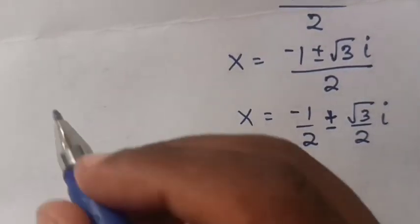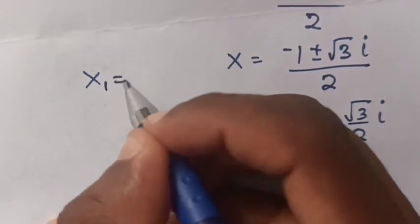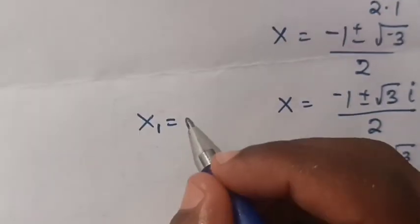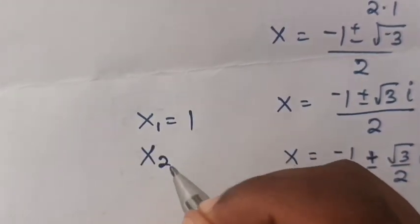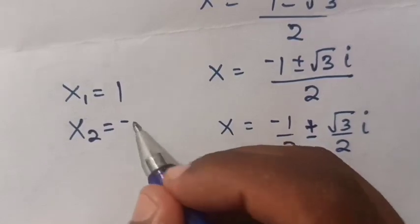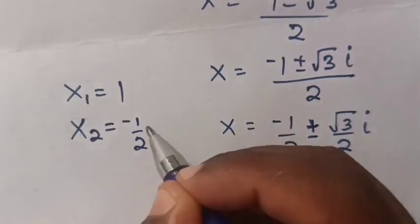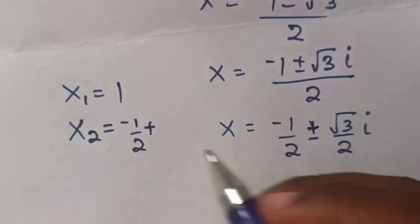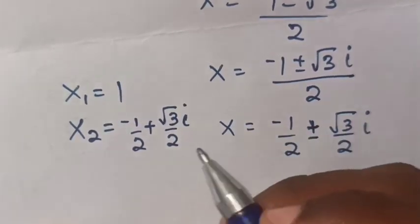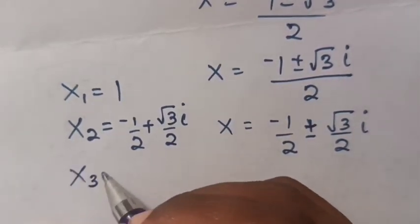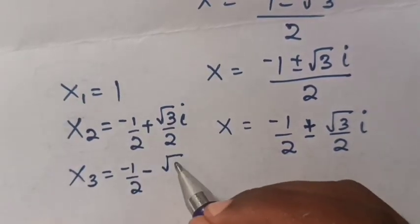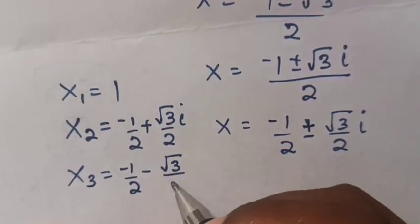Now the values of x are three. x₁ = 1, x₂ = -1/2 + (√3/2)i, and x₃ = -1/2 - (√3/2)i.